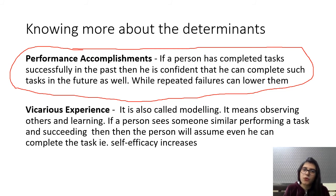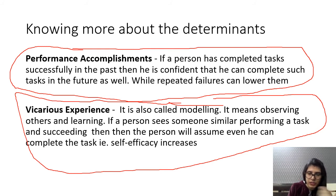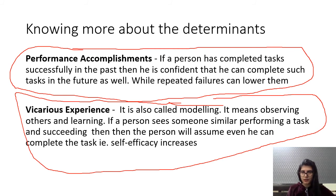Vicarious experience, also called modeling, means that if we observe another person similar to us — with similar traits and capabilities — successfully accomplishing a particular task, we will believe that we can also do that task. Because the person doing the task is also like us, has the same education and skills, we believe we will also be able to achieve it.